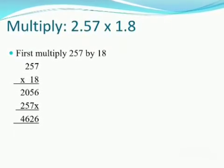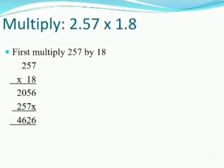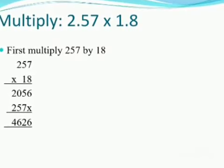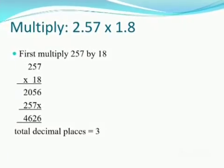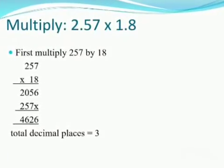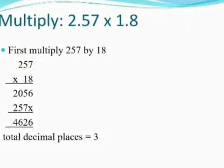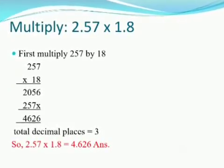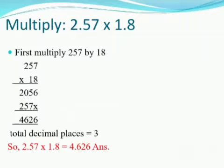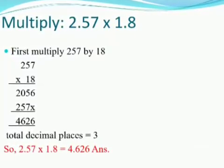Now add these two; we get 4626 as the final product. Now count the total number of decimal places in both decimals. We get 3. So there should be 3 decimal places in their product also. So 2.57 multiplied by 1.8 will be equal to 4.626.